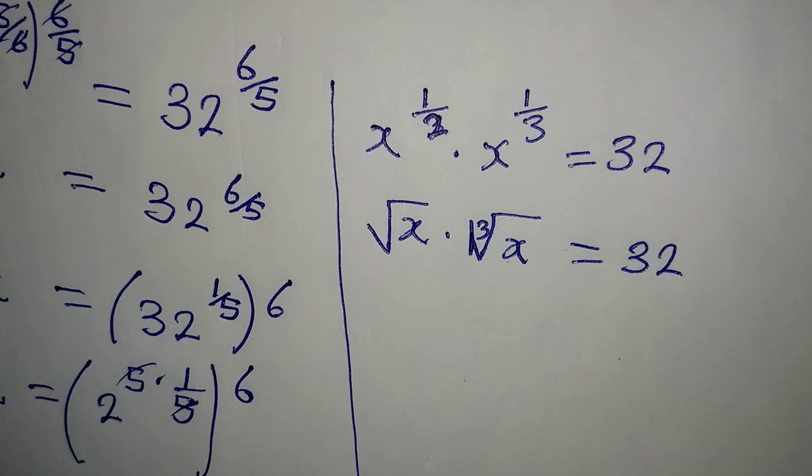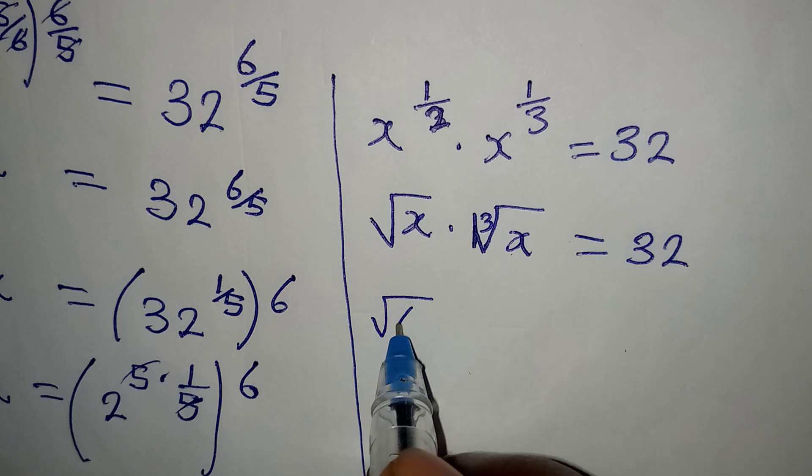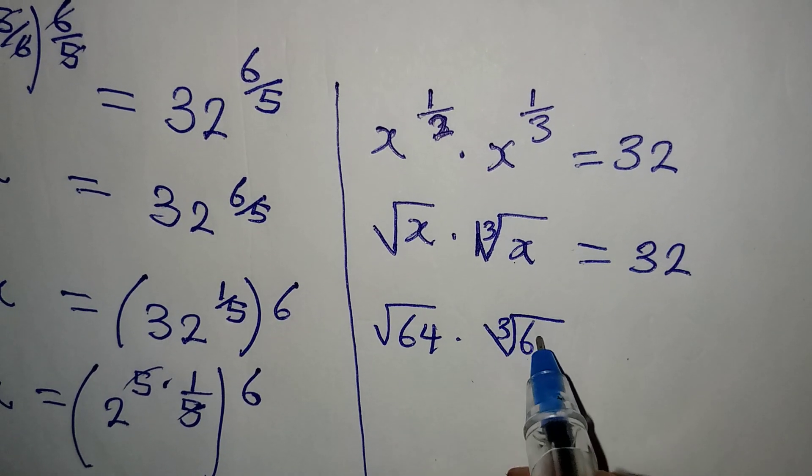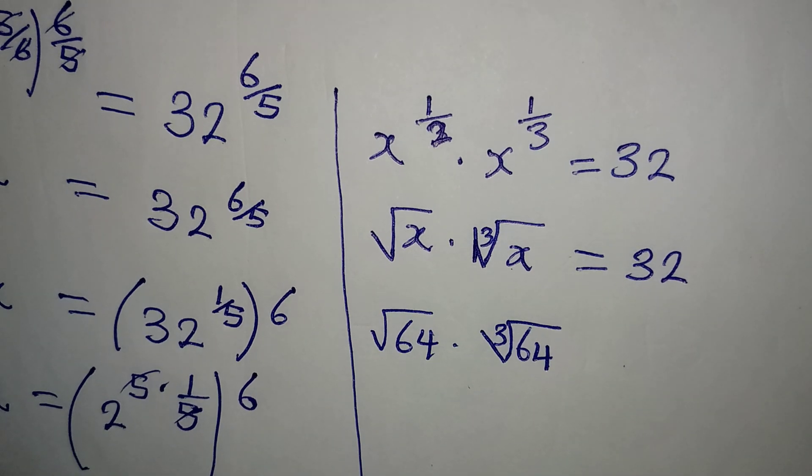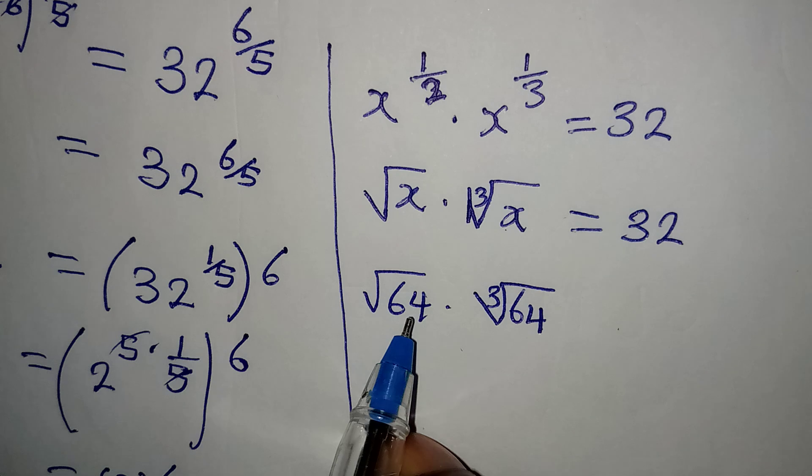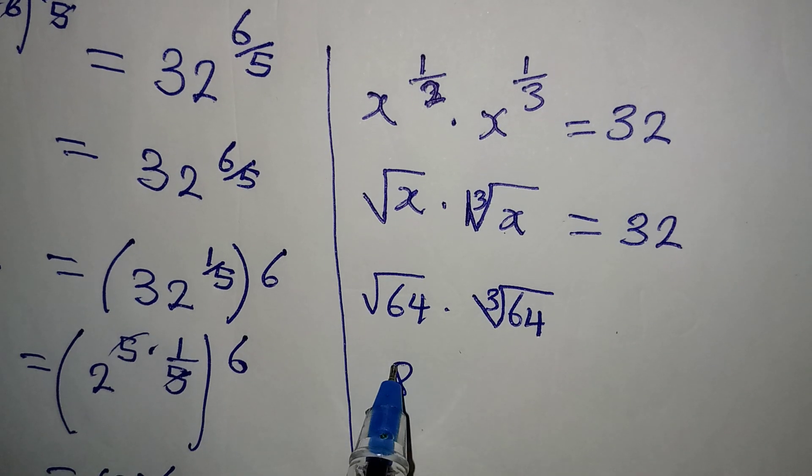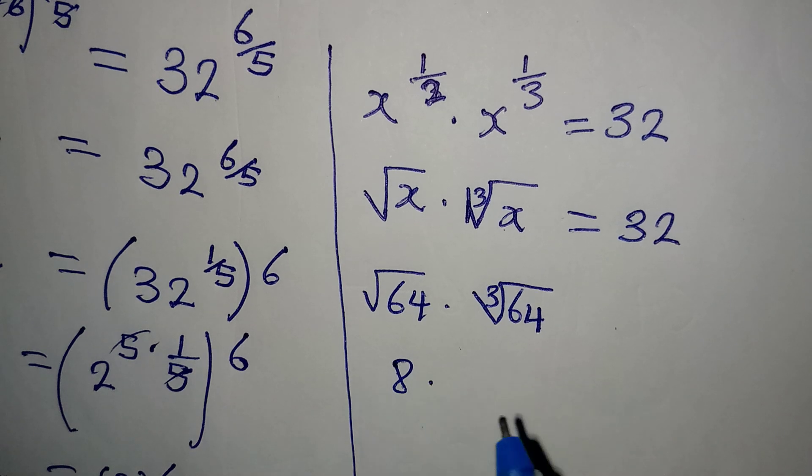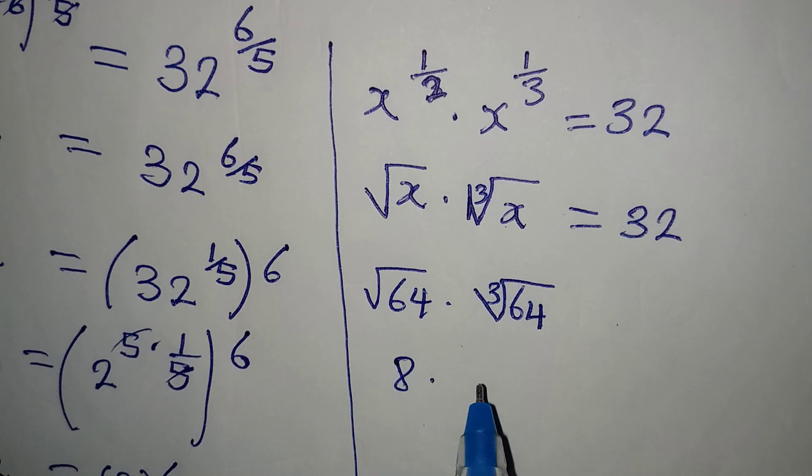Now put in your 64. So we have square root of 64 multiplied by the cube root of 64. Will this be equal to 32? Let's go. Square root of 64 is 8, because 8 times 8 is 64, multiplied by the cube root of 64 is 4.